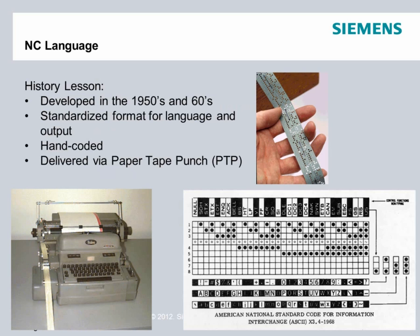A little bit of a history lesson. NC language was developed in the 1950s and 60s, and it had a standardized format for language and output so that all machine tools at that time had the same language. You could take a tape punch for one machine and move it to another and run it, as long as it had the same characteristics and kinematics — in other words, as long as they were both three-axis machining centers. Initially, these were hand-coded, so somebody would sit down at a special typewriter called a flexowriter and type out the words one by one: G00, G90, G71. And then it was typically delivered to the machine via a paper tape punch. In fact, our extension for the files that we send to the machine for Siemens is called PTP, short for paper tape punch.